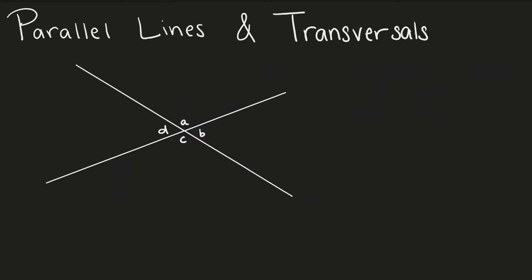If we were to look closer into two intersecting lines, we have a few other relationships we can identify. First, we have vertical angles. Vertical angles are angles that are across from each other when two lines intersect. Vertical angles are always congruent to each other. For example, angle A and angle C are vertical angles and they are congruent.